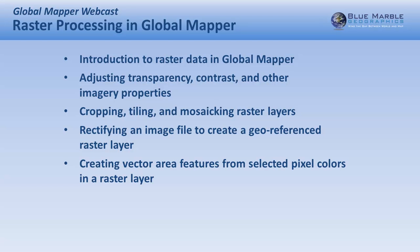We'll also introduce deriving vectors from a raster layer. This is perhaps one of the more hidden functional components of Global Mapper, but also one of the more powerful tools. I've talked to folks who have been using Global Mapper for quite some time who, when asked to find this function, are not even aware it's there. So I'm going to introduce you to the vectorization tool — the ability to derive vectors from a raster layer.